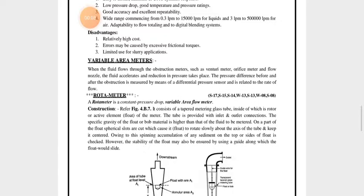This is lecture number 27. In the last lecture, we studied three types of flow measuring devices: first, the static pitot tube; second, the nozzle flow meter; and third, the turbine flow meter. All three instruments are used for flow measurement.